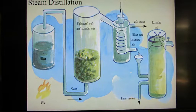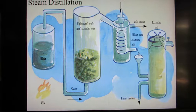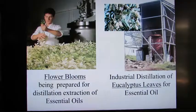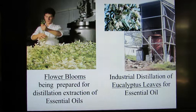Steam distillation is a very direct, simple chemical approach. Water is boiled and passed through a retort containing the blossoms, ground resin, or ground wood. Essential oils have a much lower boiling point than water, so the steam carries them out. You cool the vapor in a condenser and it reforms as a liquid. In the collection vessel, the essential oils float to the top because they are lighter in density. Shown here are distillation units — one for flower blossoms on the left and a more commercial-sized unit in Australia for collecting eucalyptus leaf essential oils on the right.